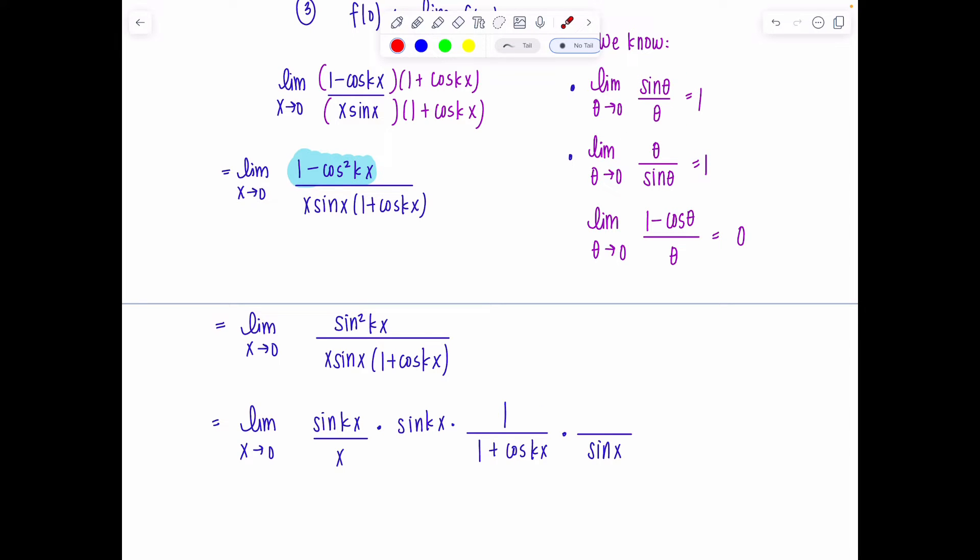Everybody's accounted for. This is sin²(kx). Let me color code for you. Here's sin²(kx), here it is. Here's x. Where's this sin x? It's right here. And then 1 + cos(kx) is right here.